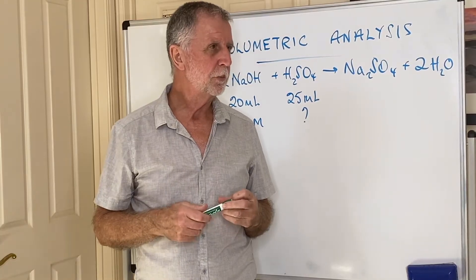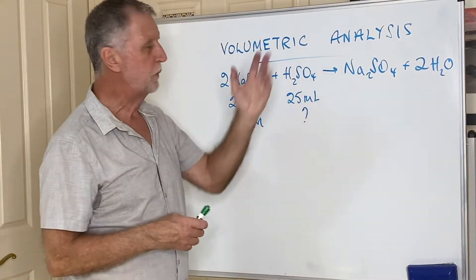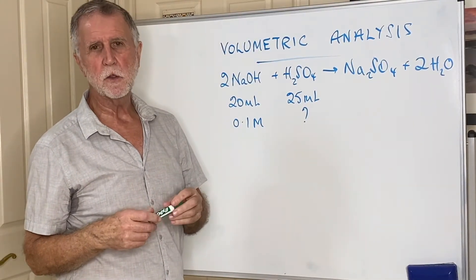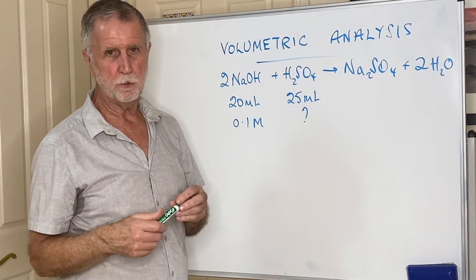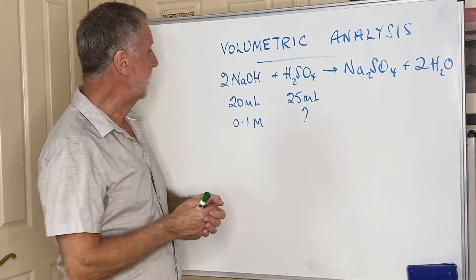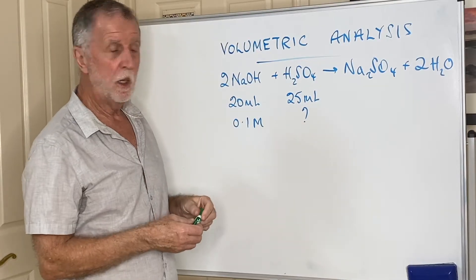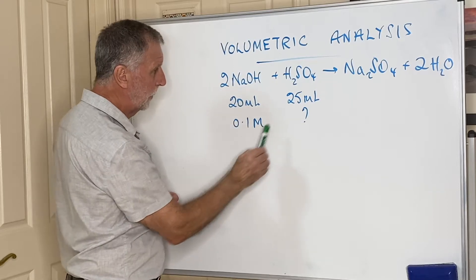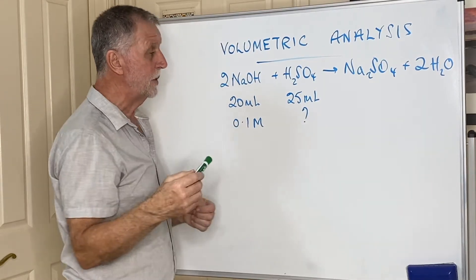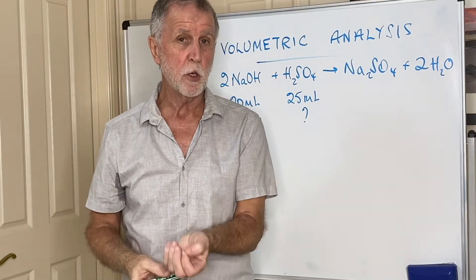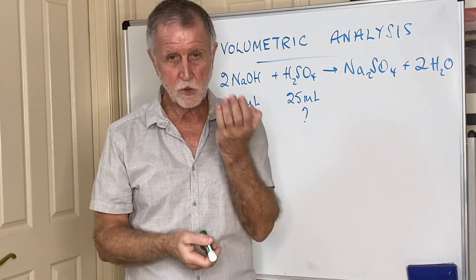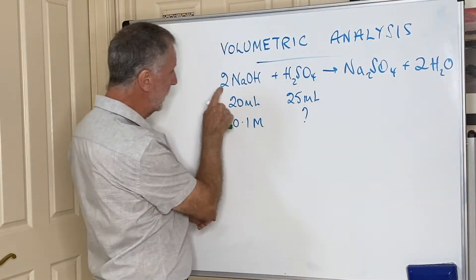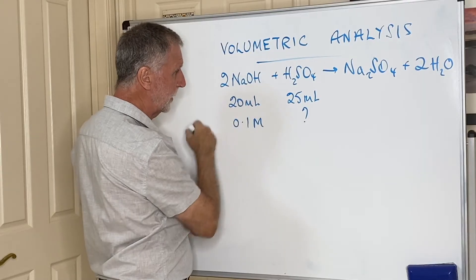Some students needed to see titration calculations done step by step. If you're doing a titration between sodium hydroxide and sulfuric acid, and you know the volume and concentration of the alkali and the volume of the acid, and the question asks you to calculate its concentration, it's a simple stage-by-stage process. First, you need the balanced equation, because you need to know the stoichiometry — the ratio between the two reactants.